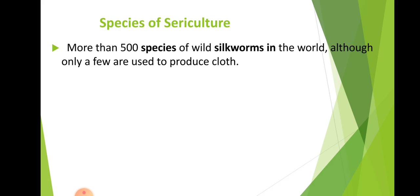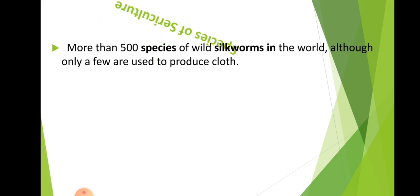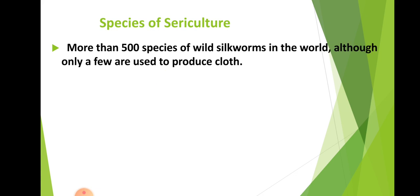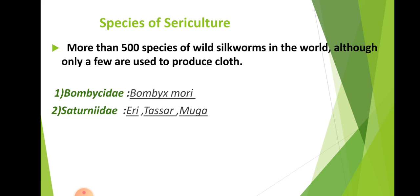More than 500 species of wild silkworm are present in the world, but not all of them are used to produce silk cloth. Only some can be used. There are two families — Bombycidae and Saturniidae. Bombycidae includes Bombyx mori, and Saturniidae includes Eri, Tassar, and Muga. These four are the most common and highly useful silkworm species used for silk production.